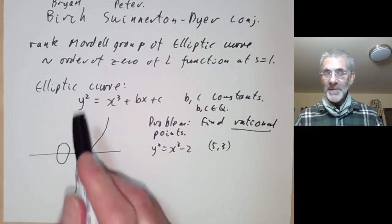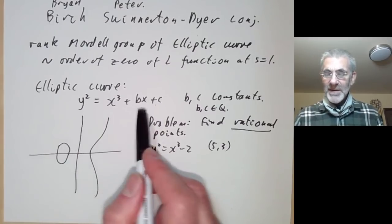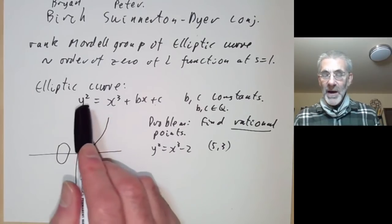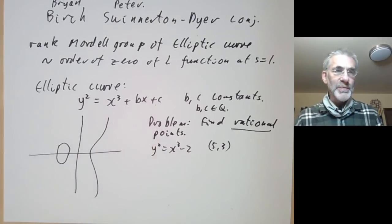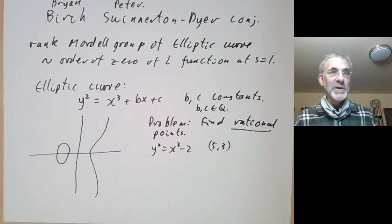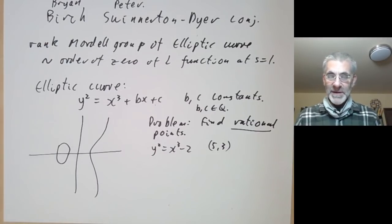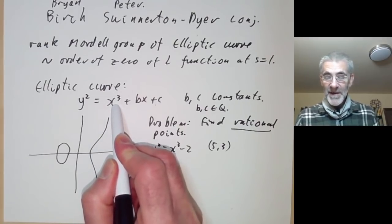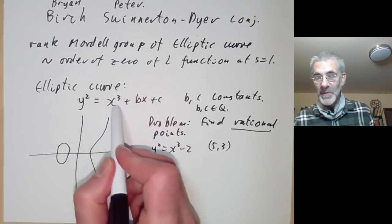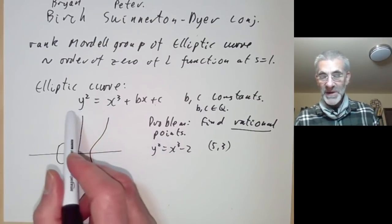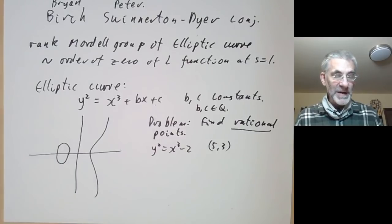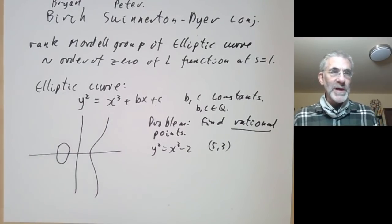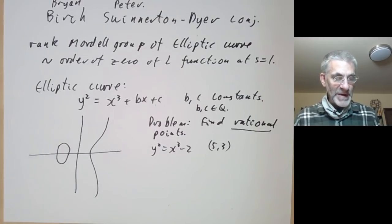One reason for the interest in elliptic curves is that they are in some sense the simplest curves we don't really understand. Degree-two curves we've had pretty much under control since the time of Gauss. But for degree three, there are still lots of basic things we don't know about them — so this is the simplest non-trivial example. Elliptic curves have very little to do with ellipses; they're called elliptic curves for roundabout historical reasons.